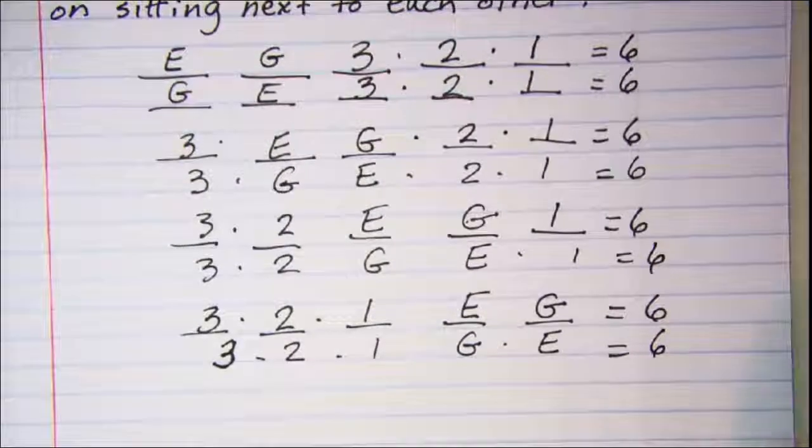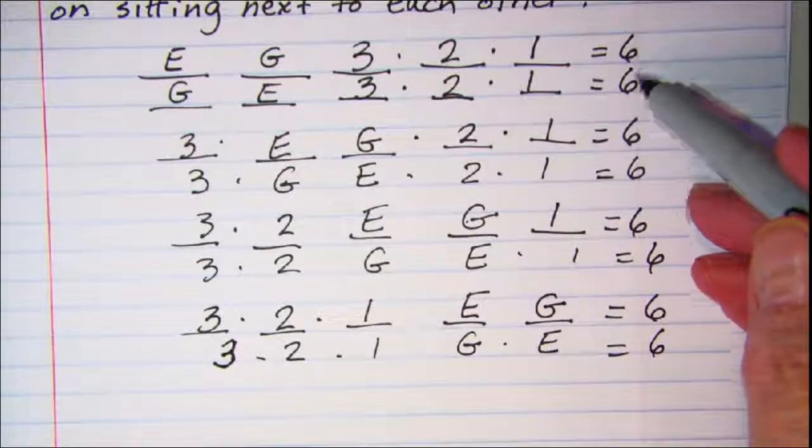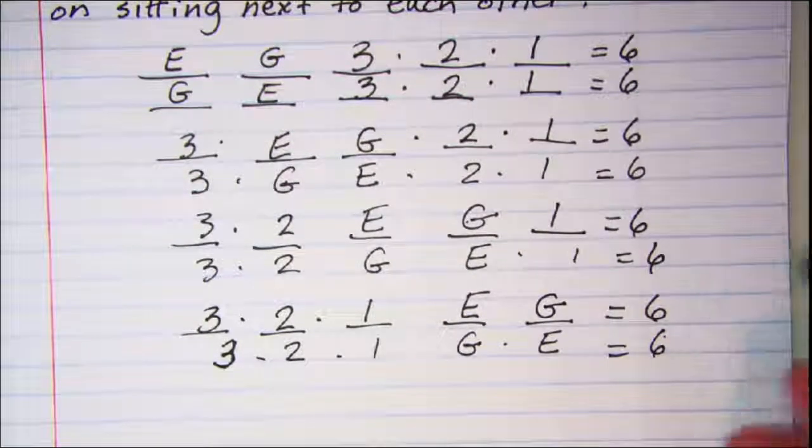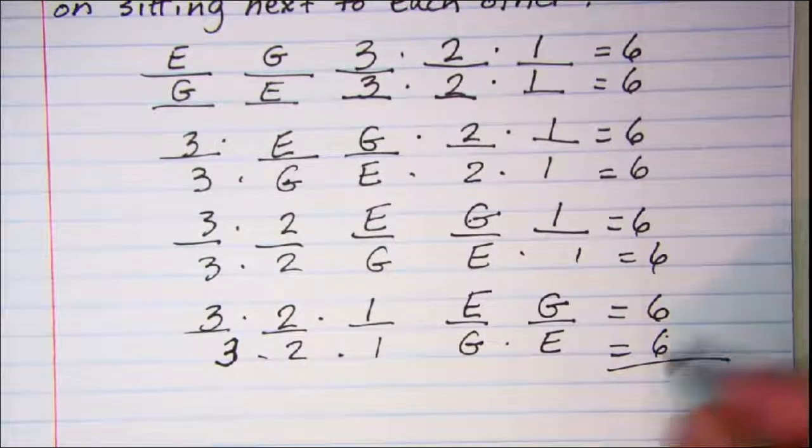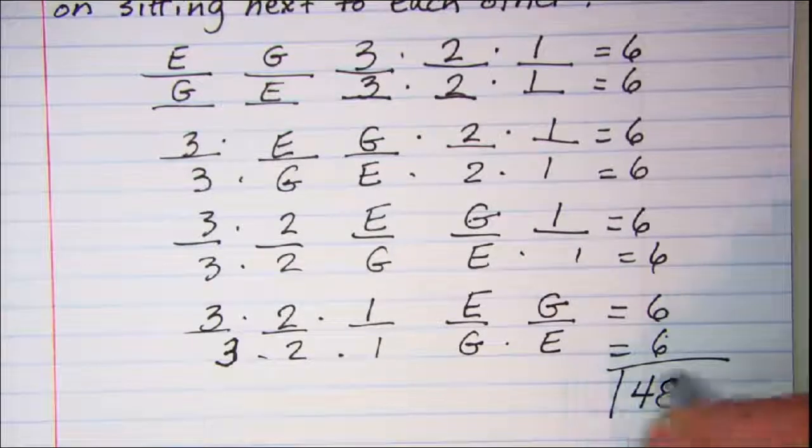So we would total these up. There's two, four, six, eight. Eight sixes. So I have 48 ways to seat them.